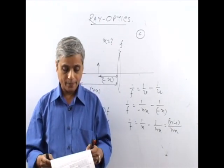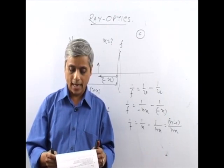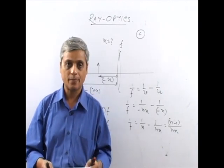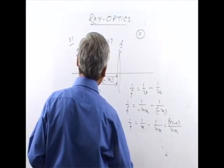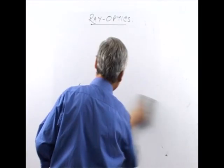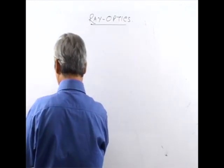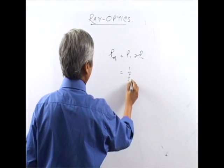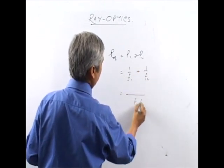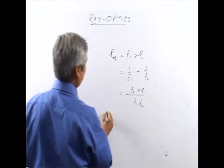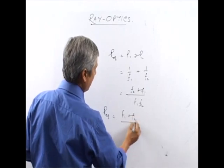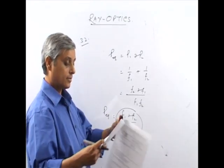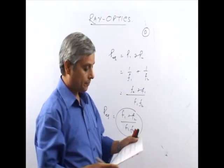Question number 32: Two thin lenses of focal lengths F1 and F2 are in contact and coaxial. For lenses in contact, powers add directly. Equivalent power P = P1 + P2 = 1/F1 + 1/F2 = (F1 + F2)/(F1·F2). Therefore the equivalent power of the combination is (F1 + F2)/(F1·F2). The answer is D.